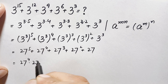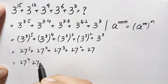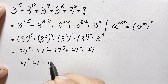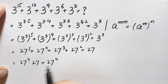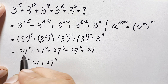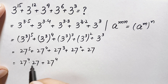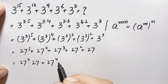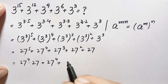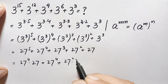Next, we can rewrite 27 to the power 5 as 27 to the power 4 times 27 to the power 1. Combining these two terms — since the base is the same — we add powers: 4 plus 1 equals 5, giving 27 to the power 5.